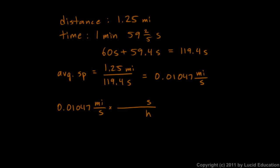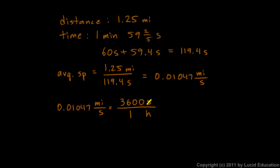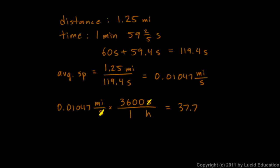One hour equals 3,600 seconds, so our conversion fraction is 3,600 seconds per hour. The seconds cancel out, leaving miles per hour. Multiplying 0.01047 by 3,600 gives us 37.7 miles per hour — that's Secretariat's average speed.